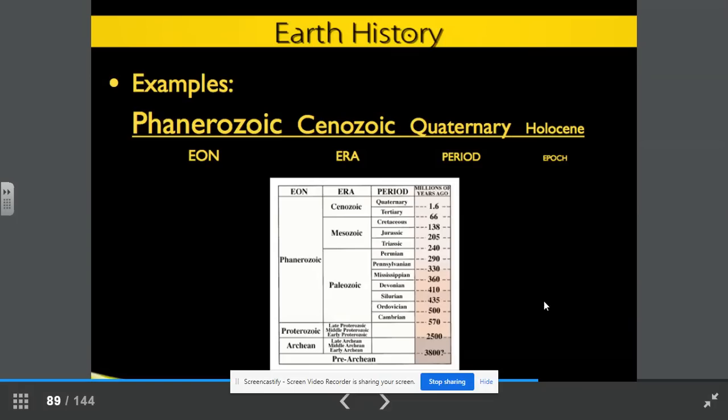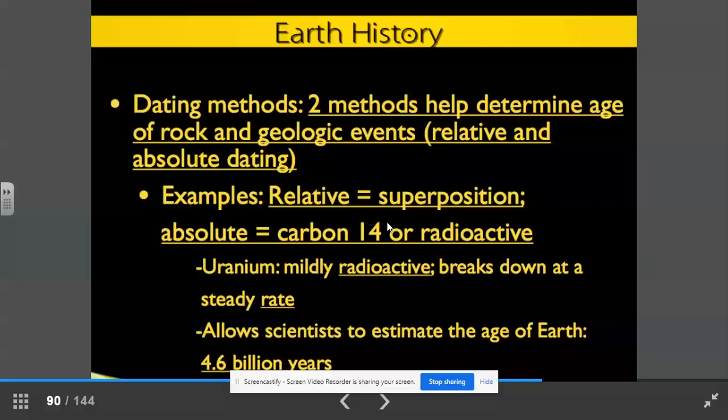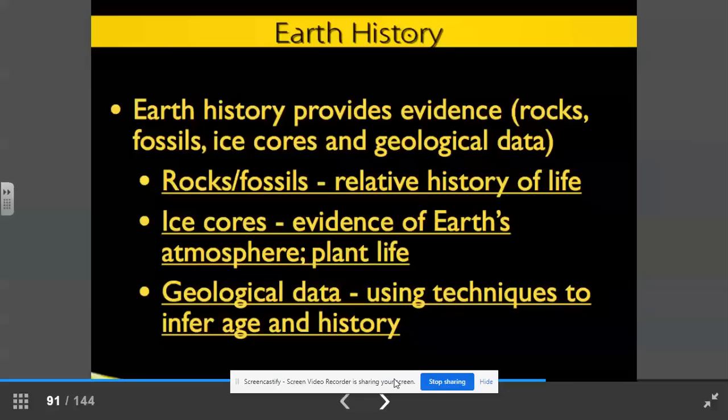Dating methods. We have two methods that help us determine age of rock and geologic events. These are relative and absolute dating. Relative dating, relative equals superposition. Absolute would be carbon-14 or radioactive. Uranium, mildly radioactive, breaks down at a steady rate. This allows scientists to estimate the age of the Earth, which is about 4.6 billion years old, give or take a few hundred million years.